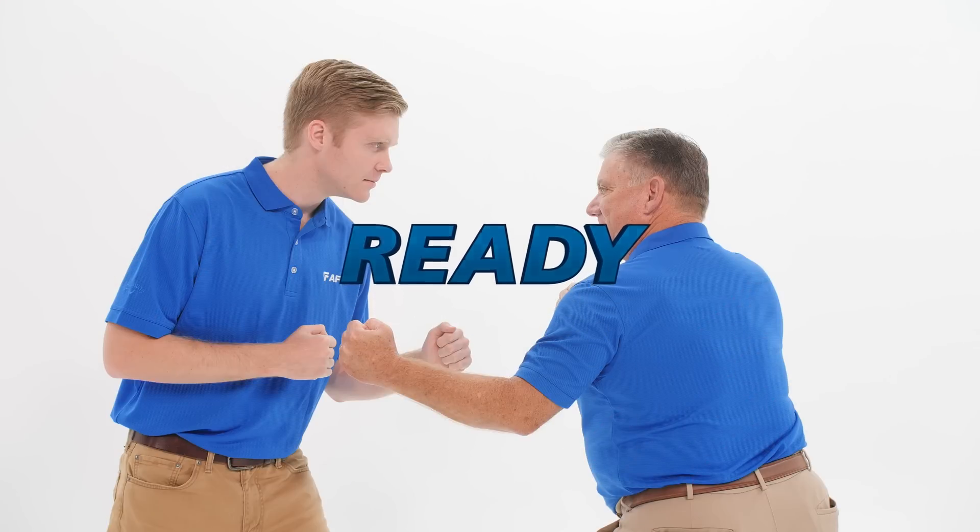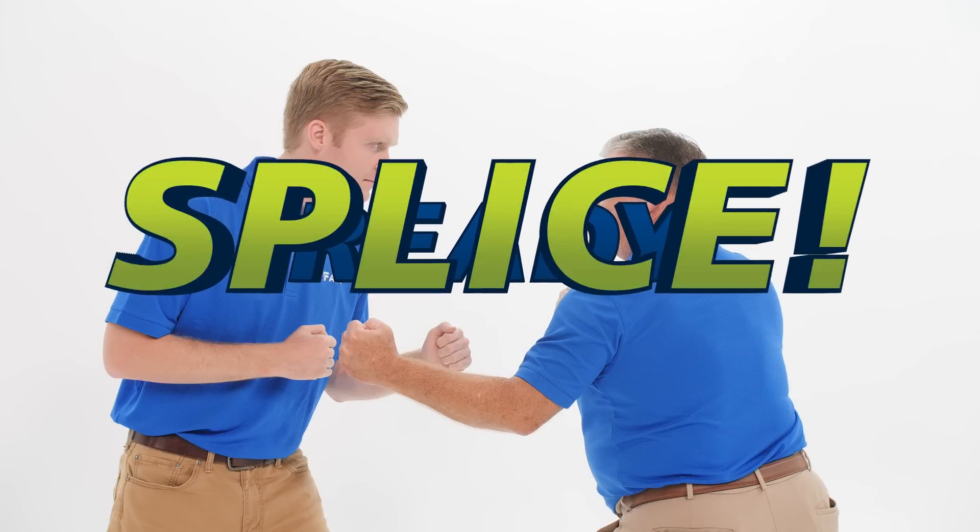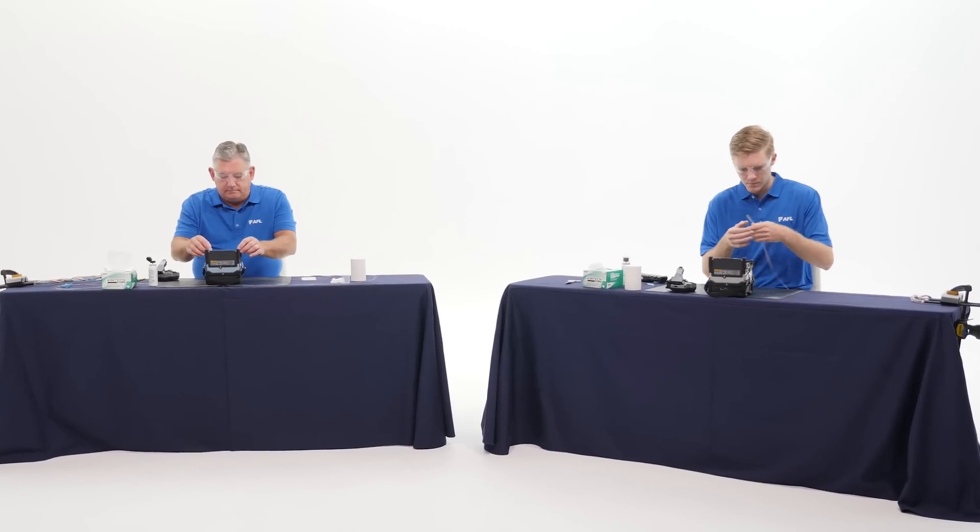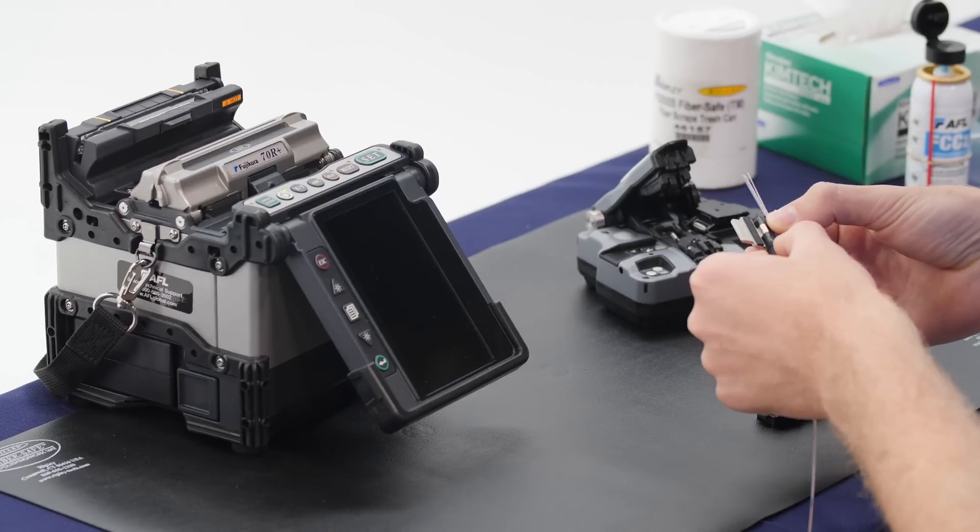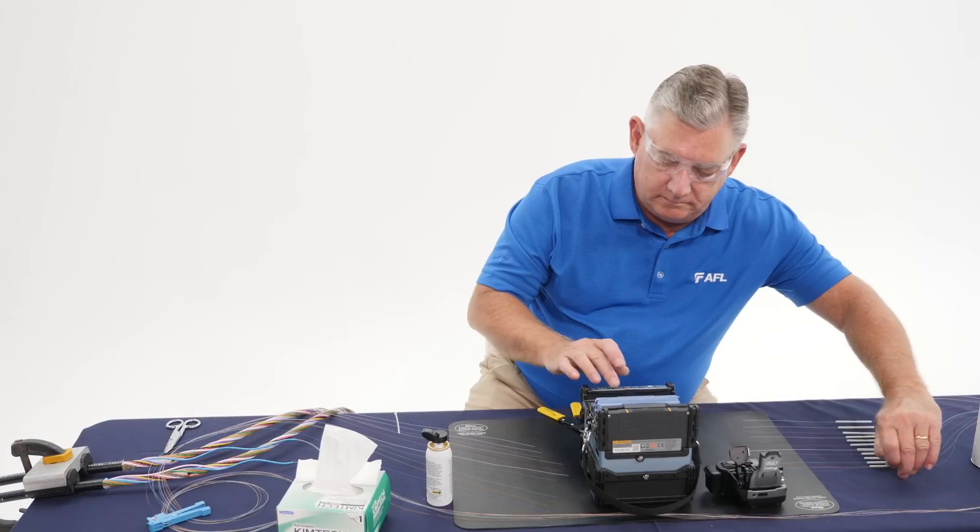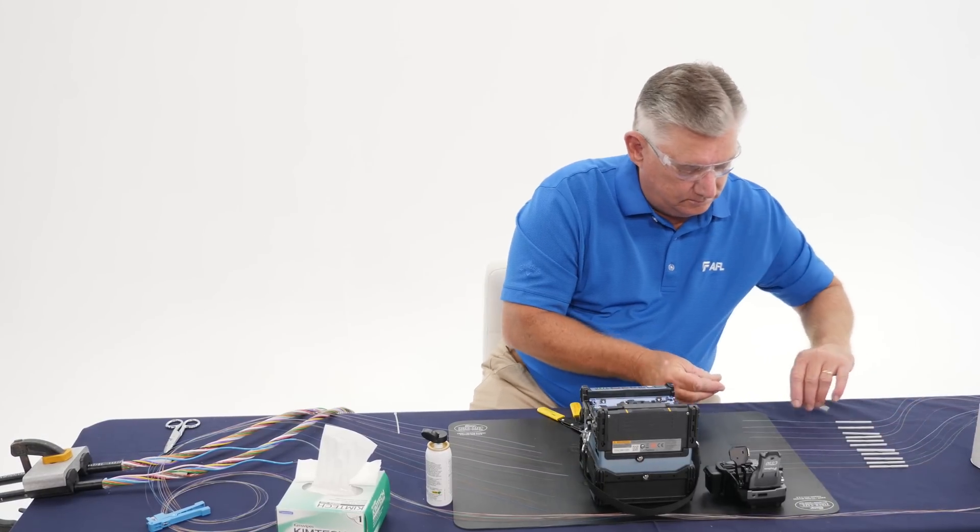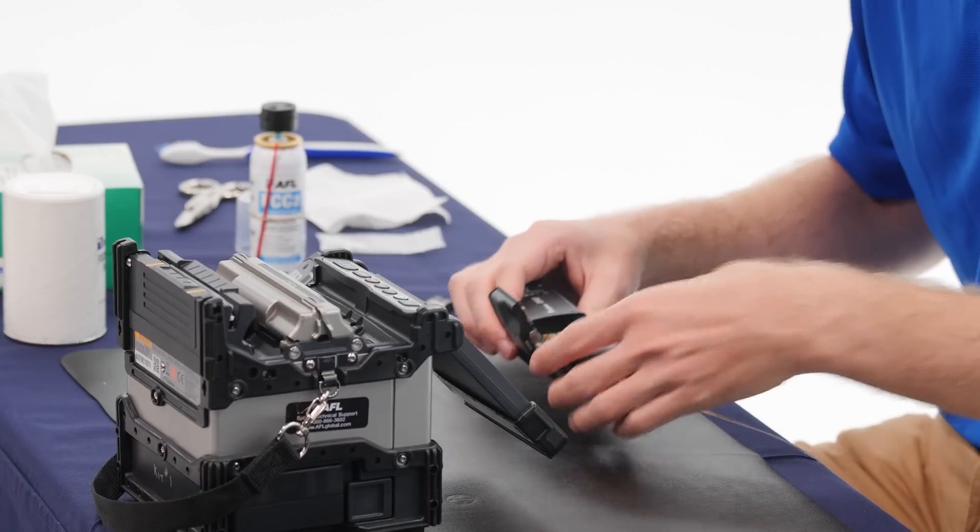Ready, splice! Alright, we're ready for the splice off. Rob will be working with the AFL spider web ribbon. He already has a ribbon loaded into his fiber holder. Pat Dobbins is working with the traditional loose tube cable. Removal of the acrylate coating and there he goes. He's using a thermal stripper to remove that acrylate coating.